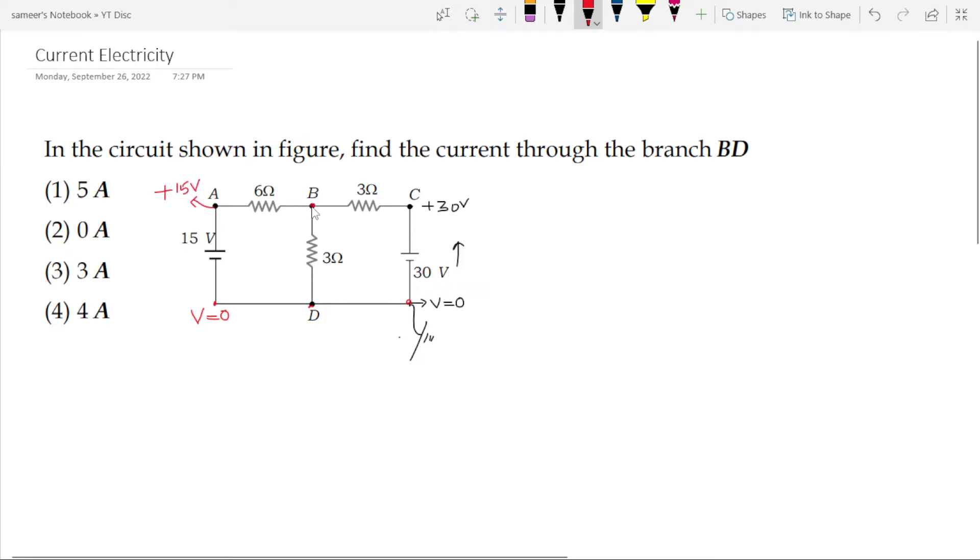Now, we need to find the potential at point B. Let us say the potential at point B is x. Since this point is a junction, then we apply junction law which is Kirchhoff's current law sigma i which is sum of the current at the junction is 0